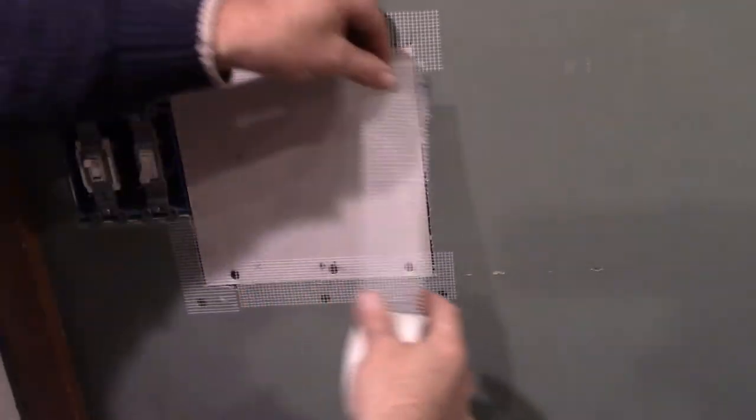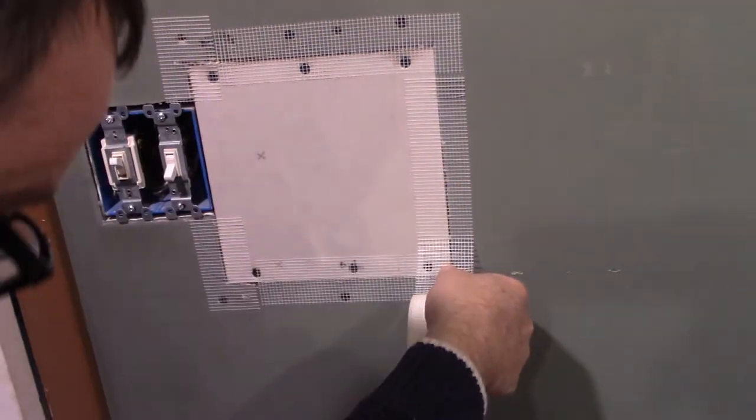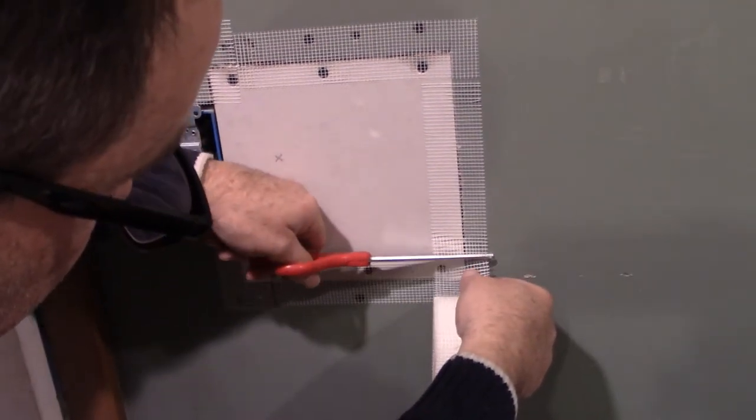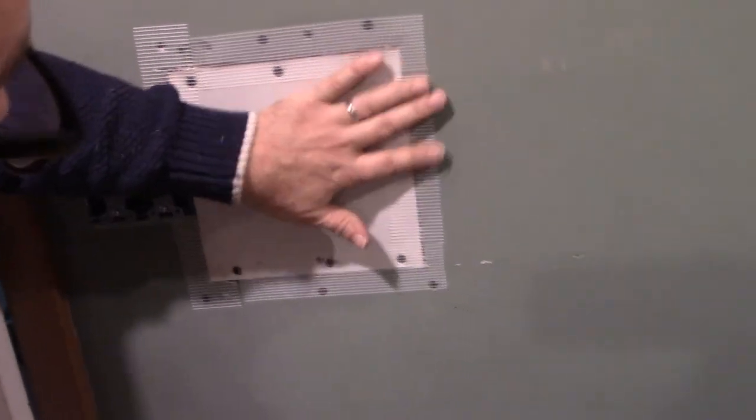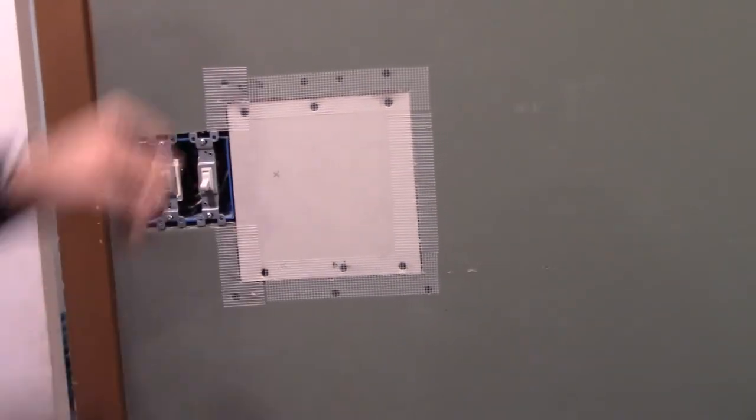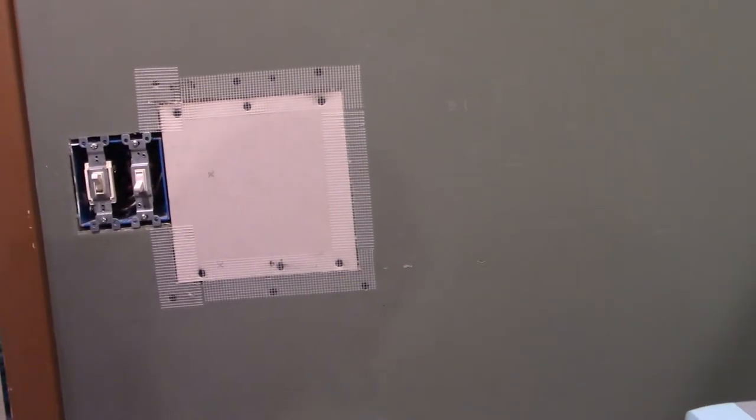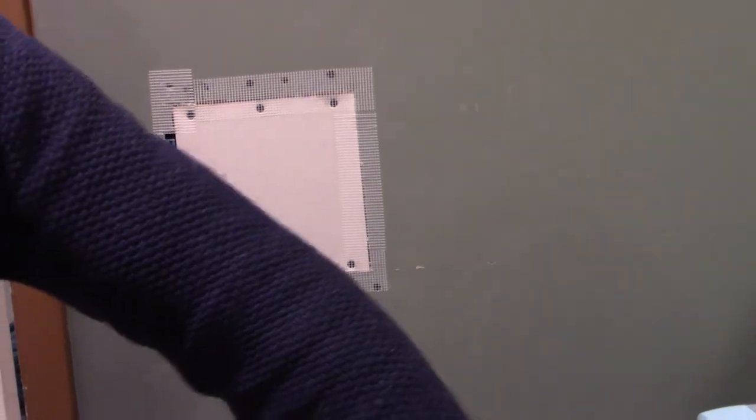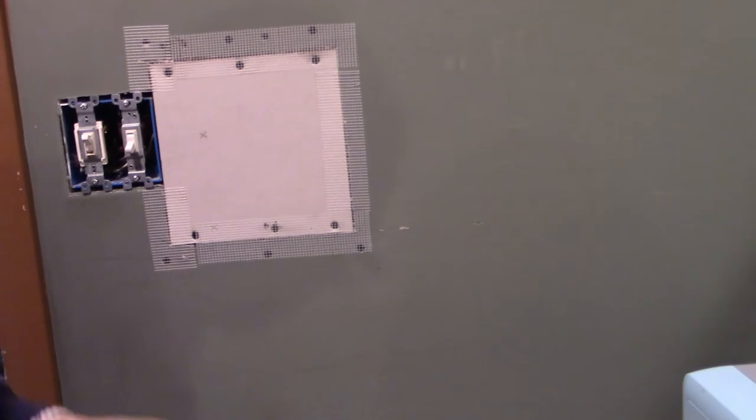So I don't want to double it up and I'm continuing maybe an inch past each edge. Like I said it's slightly adhesive so it's going to stay on by itself. I don't use paper tape on a patch like this. The paper tape is fine for inside corners. But on a flat surface I love using this fiber tape.